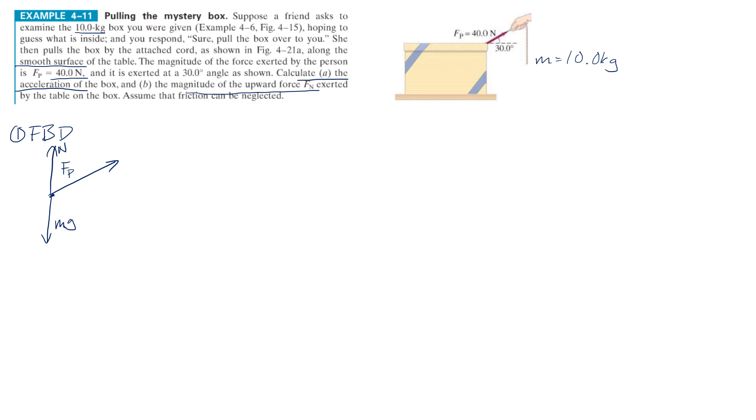So calculate A, the acceleration of the box. So really, the acceleration of the box, the box is not moving up and down. We really are only concerned with the box going left and right. So really, we're only concerned about the sum of forces along the x-axis. Does that make sense? So we no longer have to worry about normal force and mg, at least for now. Part B, we got to do a normal force, but for now, it's just forces along the x.